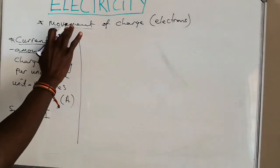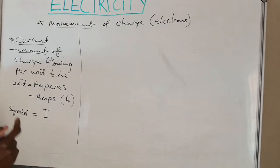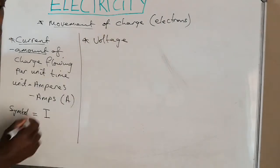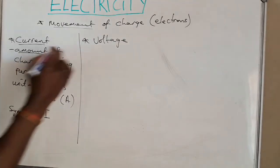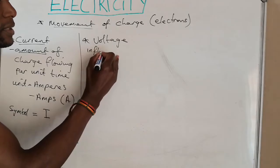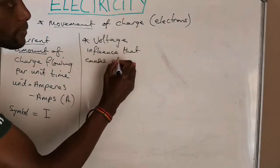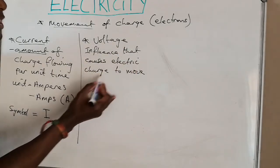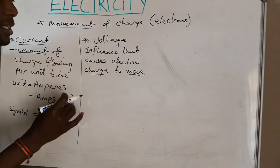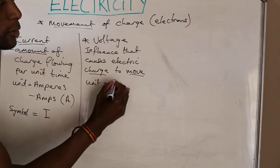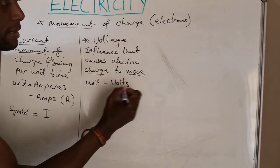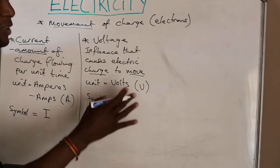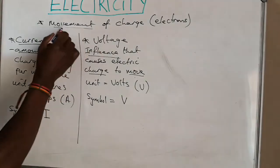The next thing we need to keep in mind under electricity is that these electrons that are moving are influenced by something — there is something that is causing them to move. That influence is what is called voltage. So voltage is basically the electrical influence that causes electric charge to move. Voltage is measured in a unit called volts, and you'll be using the symbol V even in your calculations.